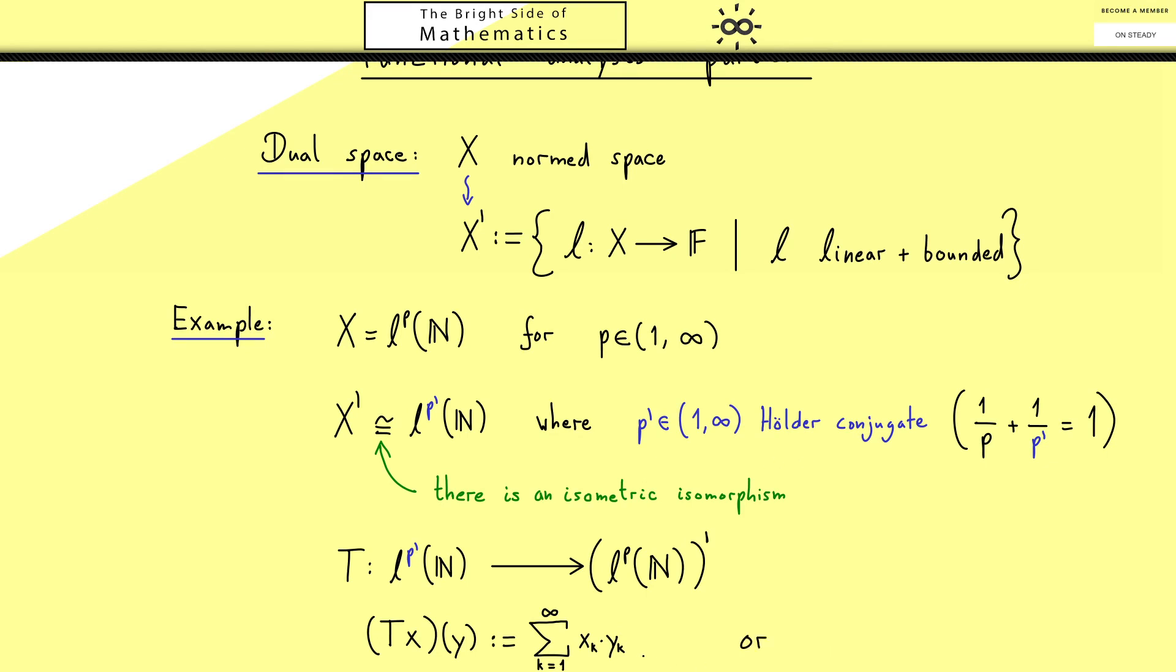If you don't like this definition because we put in two sequences x and y, you can also read this as an inner product in L2. So we send x to the inner product where the second component is open because this is the position for y, and in the first component we have x with a complex conjugation.